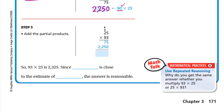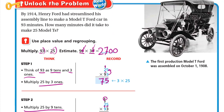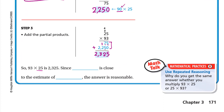Step 3: add the partial products — 75 plus 2,250. 5 plus 0 is 5; 7 plus 5 is 12, write 2 down and carry 1; so the next digit becomes 3, and write 2. The answer is 2,325. Since 2,325 is close to our estimate of 2,700, the answer is reasonable.